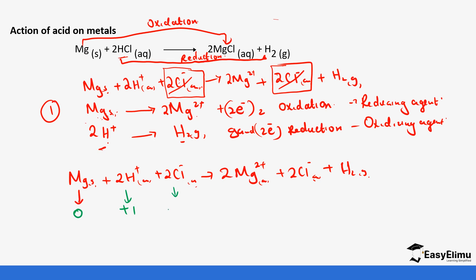The chloride ion has an oxidation number of negative one because its charge is one minus. In the products, the oxidation number of magnesium becomes positive two because it has lost electrons. Chlorine doesn't change — that is why it is cancelled as a spectator ion. For hydrogen in hydrogen gas, since it is a diatomic molecule in uncombined state, its oxidation number is zero. Magnesium changes from zero to positive two — an increase in oxidation number — which tells us there is oxidation.